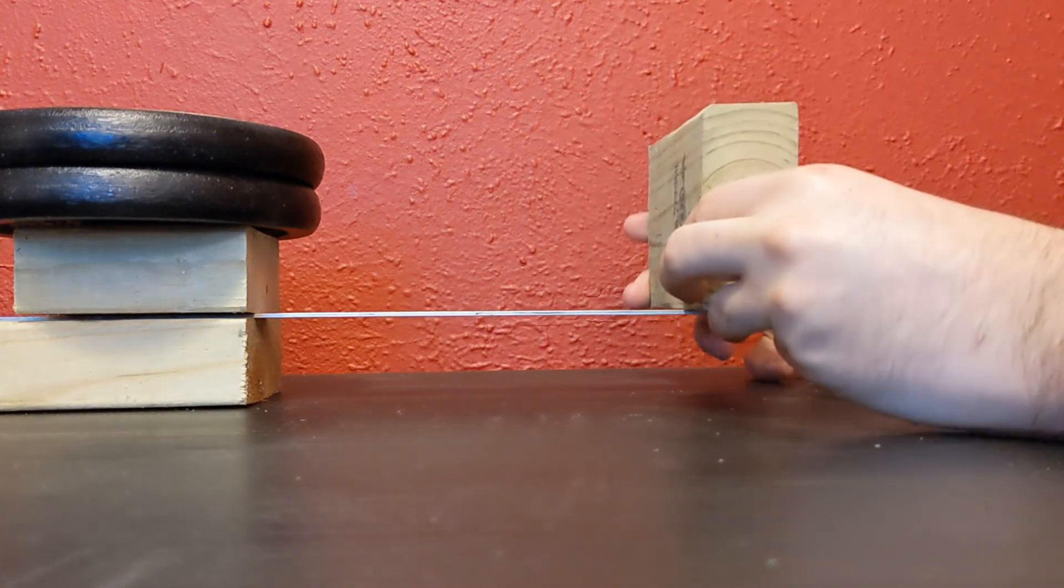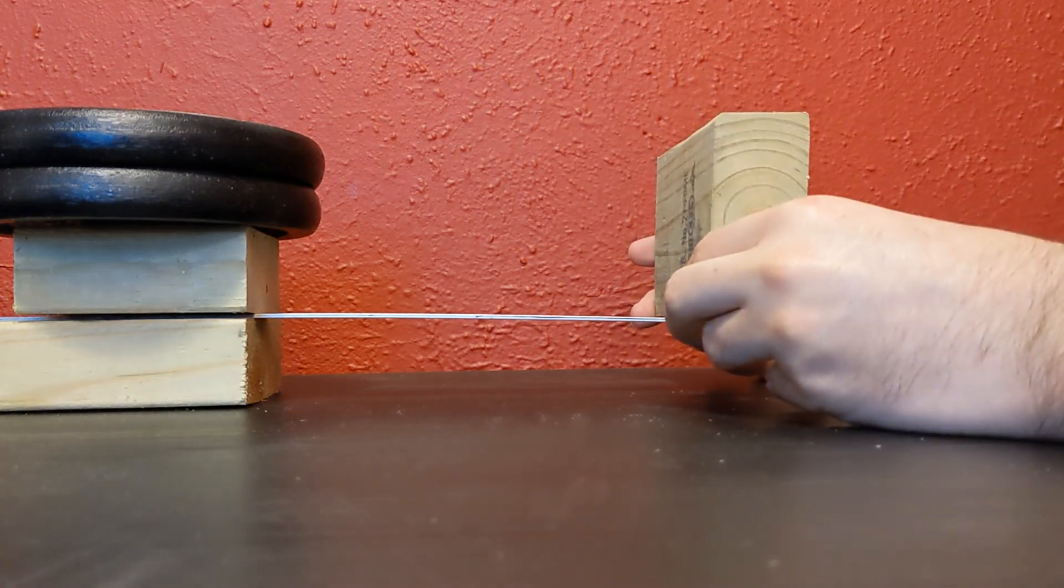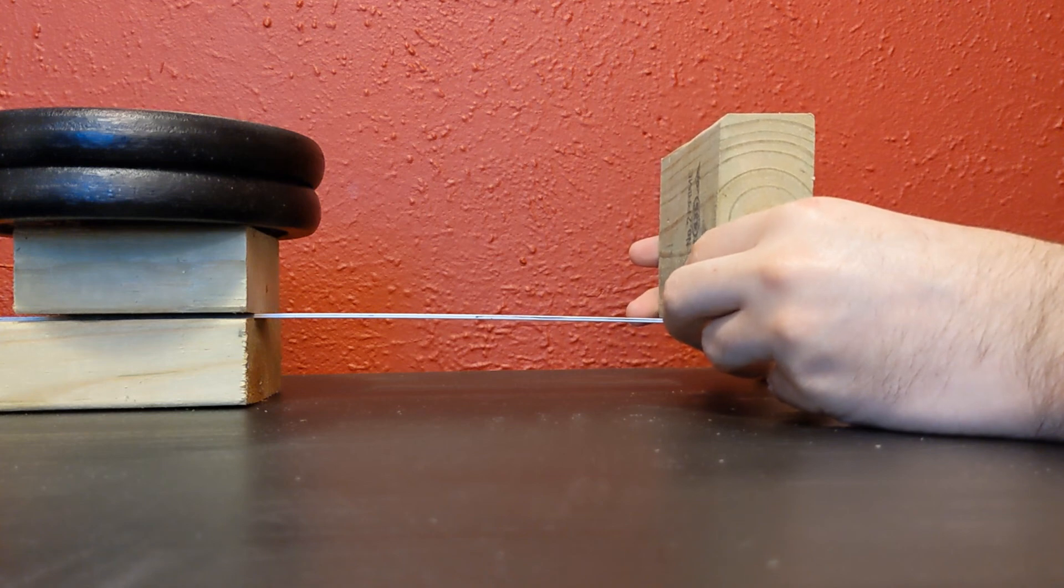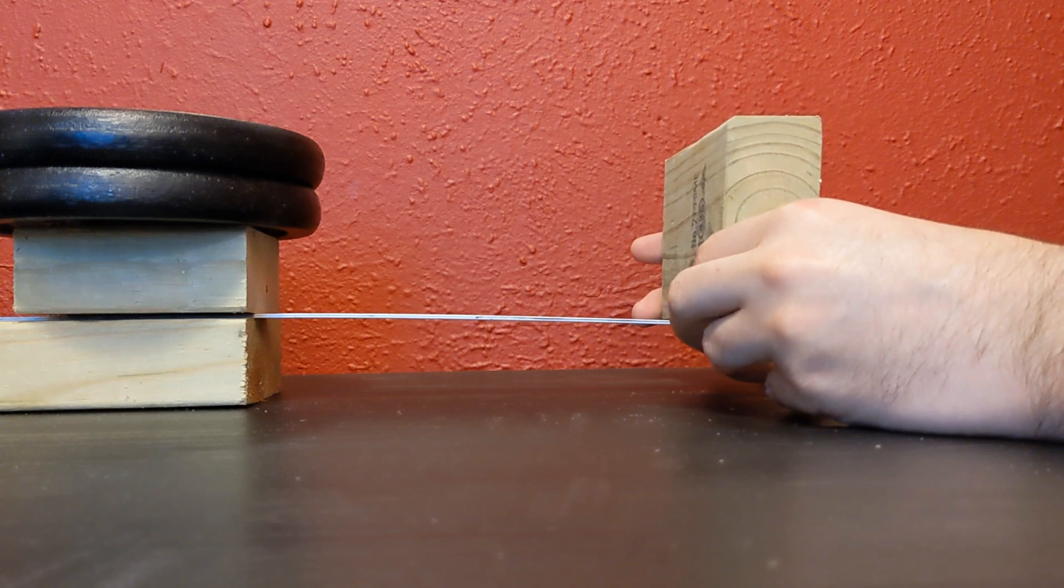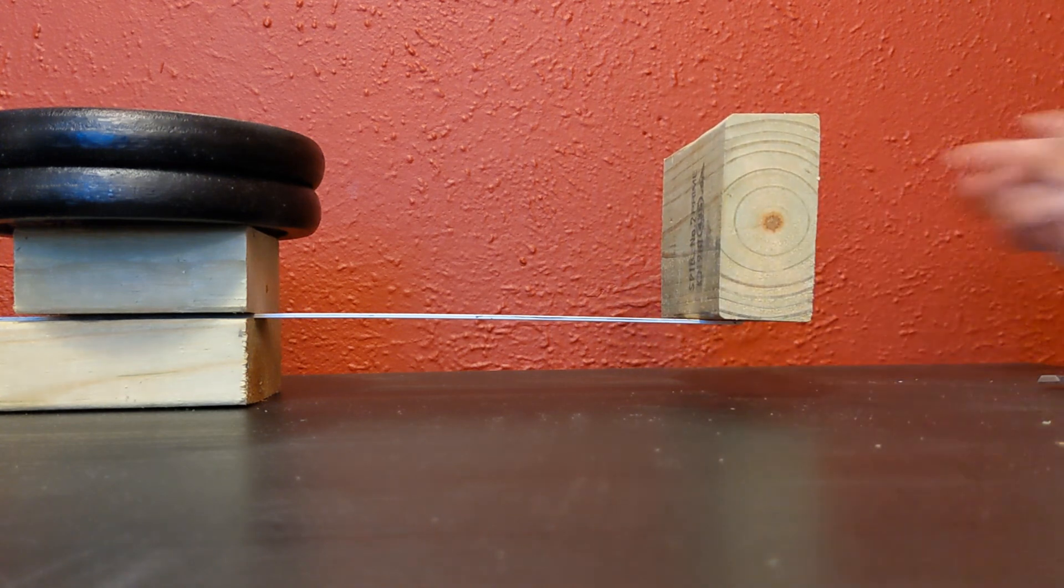If you are completing an experiment like this, I recommend putting weights on the supported end of the ruler, and also making sure there's a sharp 90-degree angle that the ruler is resting on before it goes off into the cantilever.